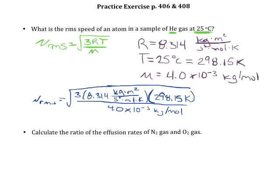If we watch our units cancel out here, we can see that the kilograms are going to go, Kelvin is going to go, moles are going to go. It's going to leave us with meters squared over second squared. But since we're taking the square root of our answer, we're going to be left in units of just meters per second. For this problem, we're going to get an answer rounded to three significant figures of 1.36 times 10 to the third meters per second.